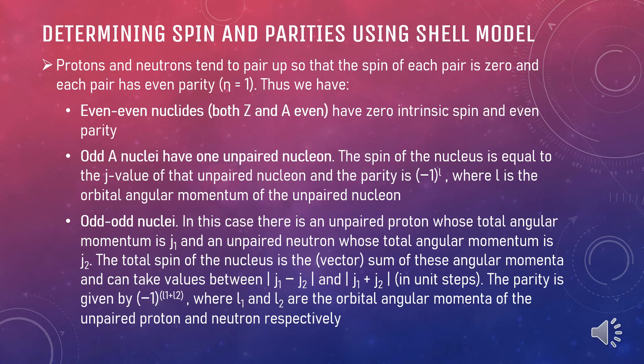The third pair is the odd-odd nuclei. In this case, there is an unpaired proton whose total angular momentum is J1 and an unpaired neutron whose total angular momentum is J2. Now the total spin of the nucleus is the sum of these angular momenta and can take values between the difference and the sum between these two values. So the parity is given by negative 1 to the power of L1 plus L2 where L1 and L2 are the orbital angular momentum of the unpaired proton and neutron respectively.